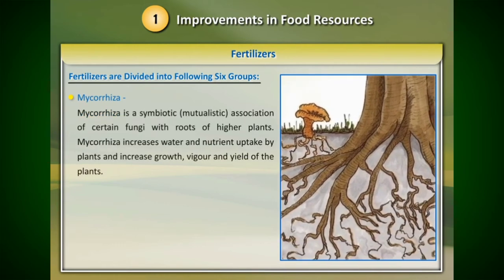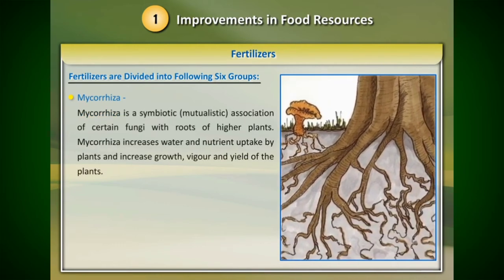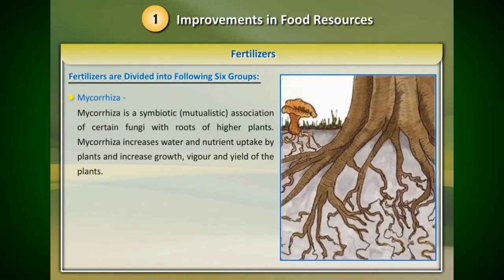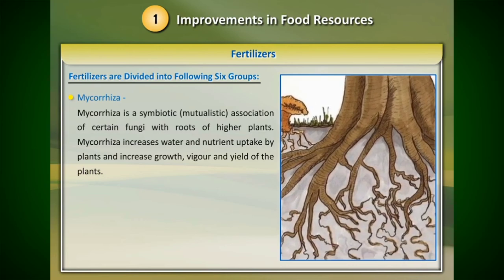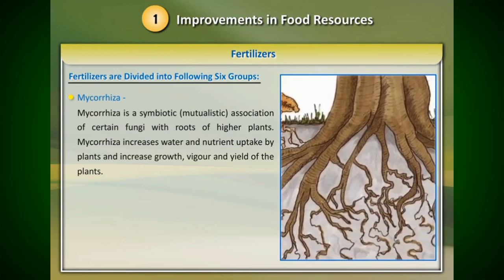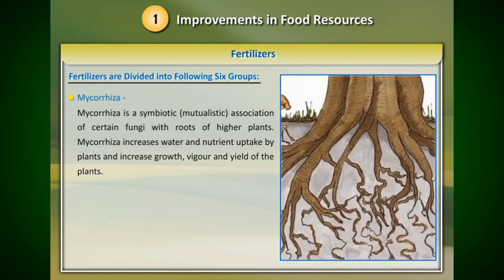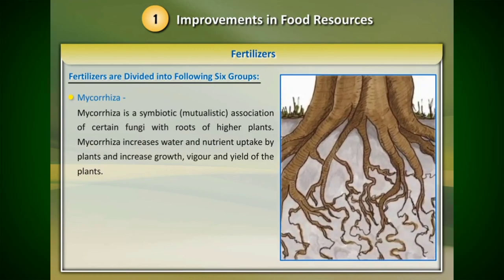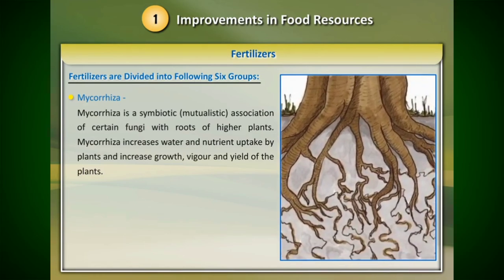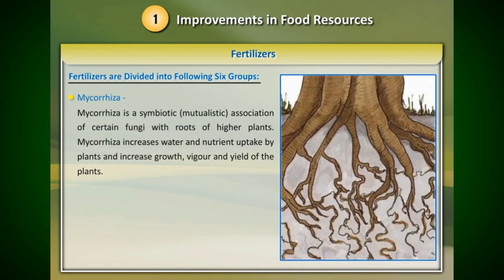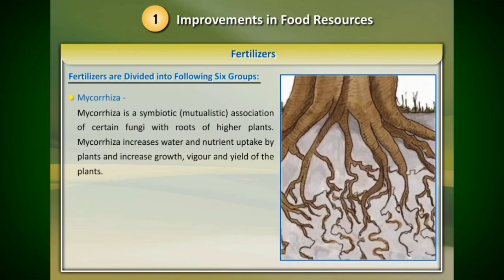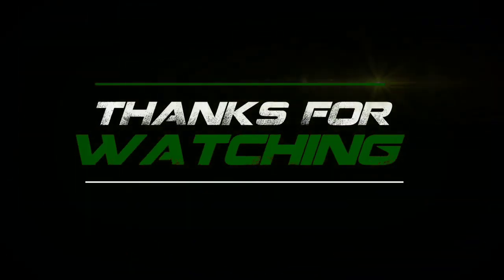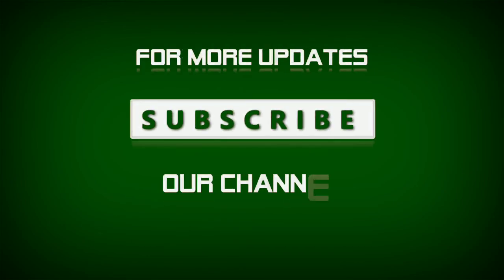Six: mycorrhizae. Mycorrhizae is a symbiotic, mutualistic association of certain fungi with roots of higher plants. Mycorrhizae increases water and nutrient uptake by plants and increases growth, vigor, and yield of the plants.